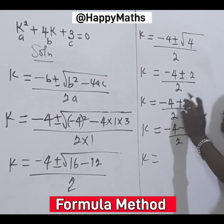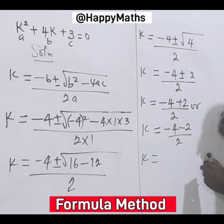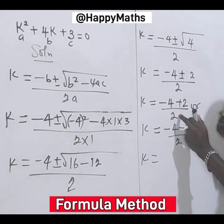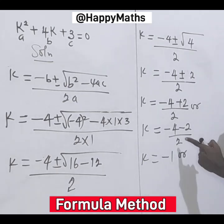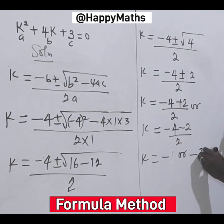K equals minus 4 plus 2 gives us minus 2, divide by 2 gives minus 1. Or minus 4 minus 2 gives us minus 6, divide by 2 gives us minus 3.